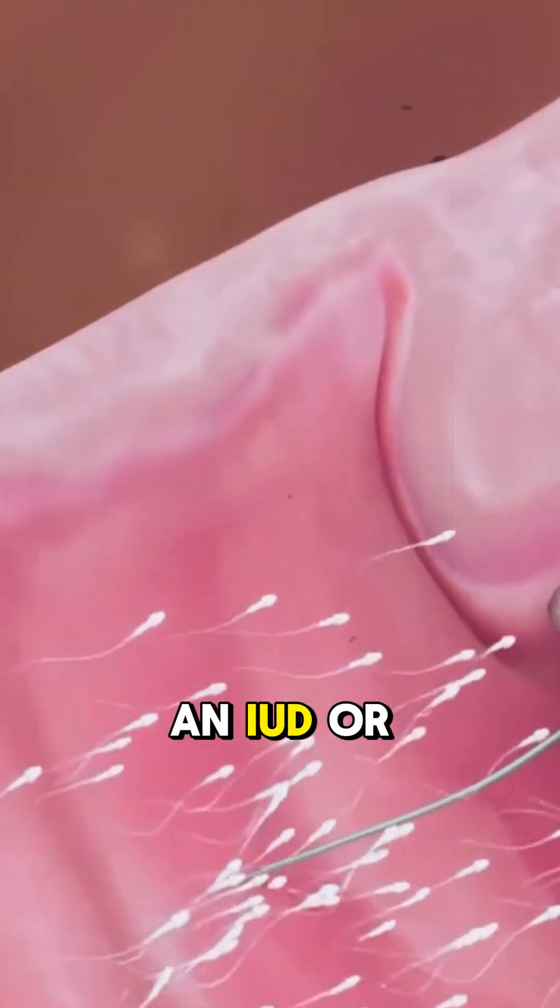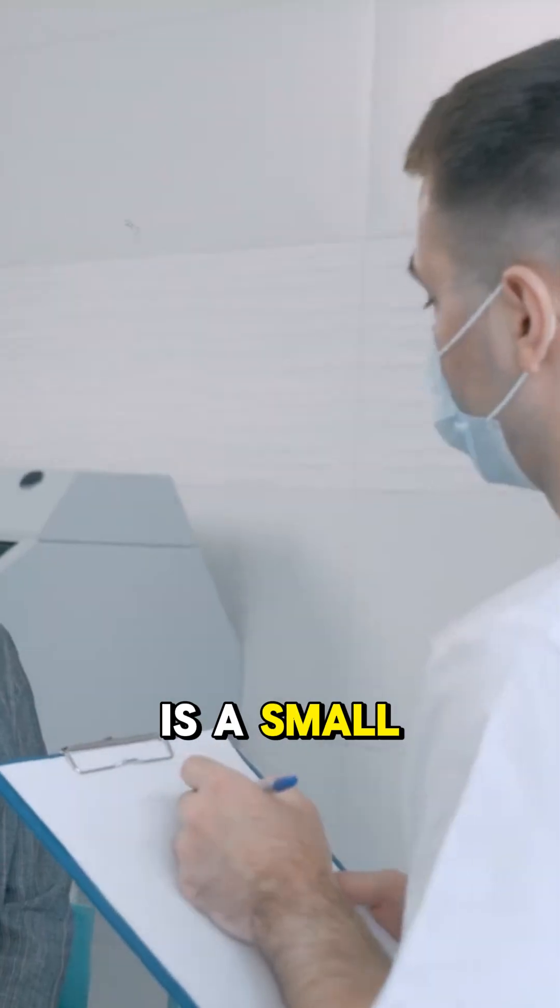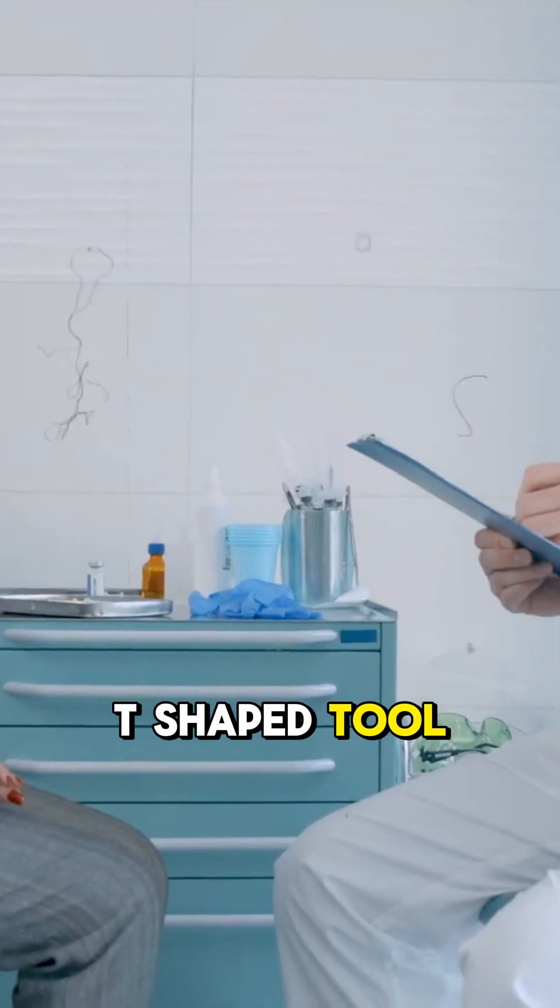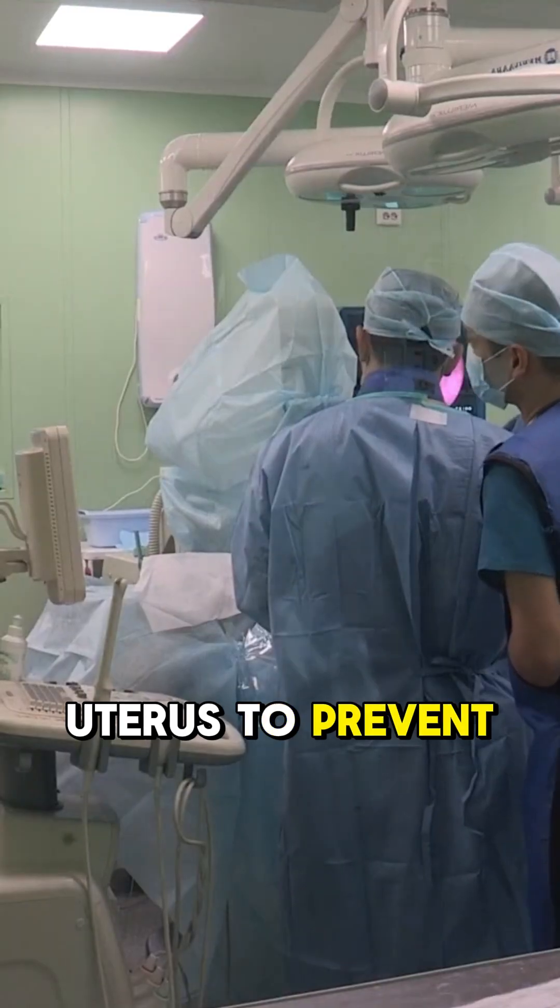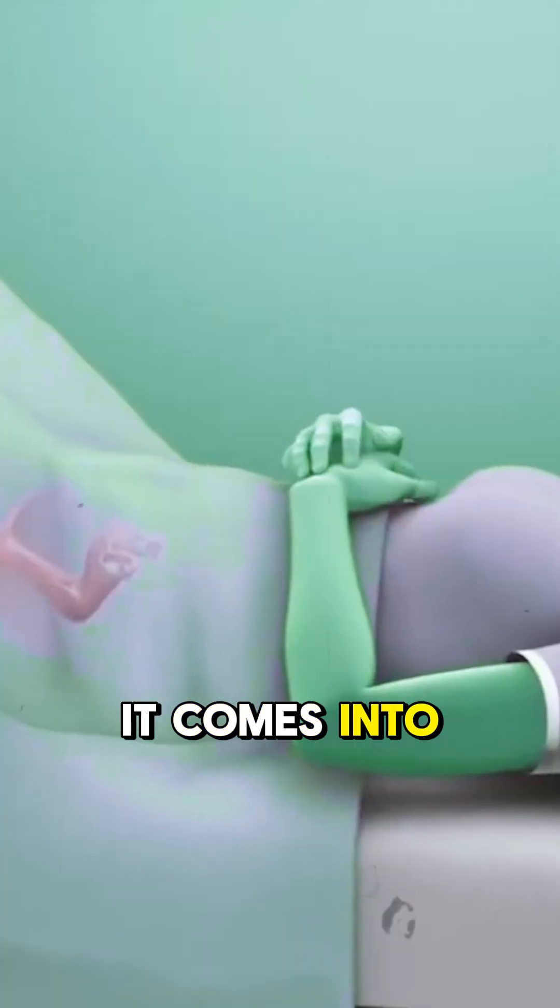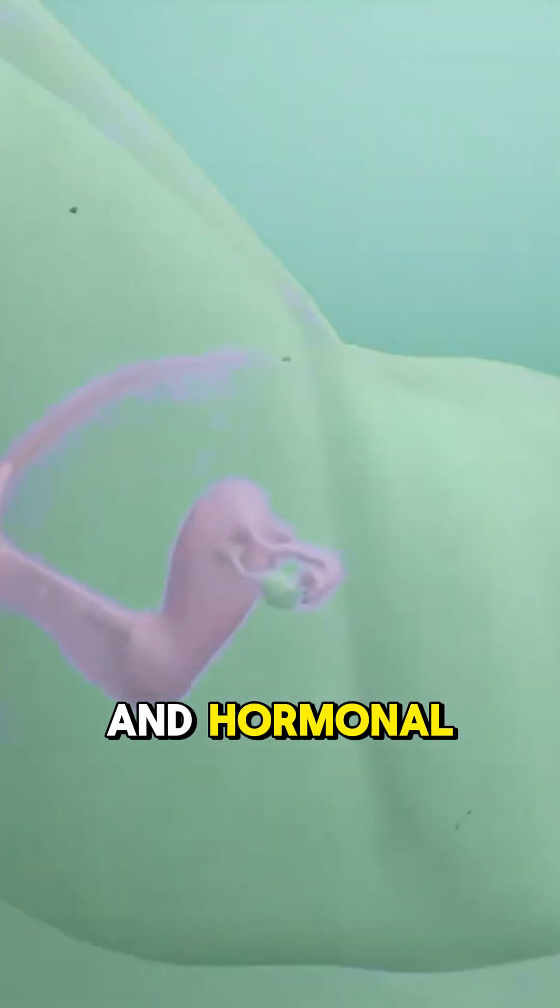An IUD, or intrauterine device, is a small, flexible, T-shaped tool inserted into the uterus to prevent pregnancy. It comes in two types: copper and hormonal.